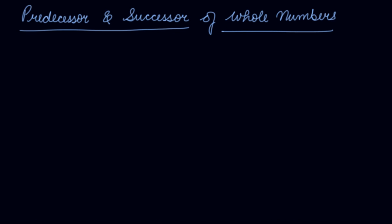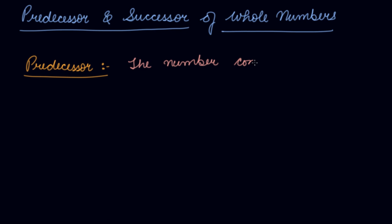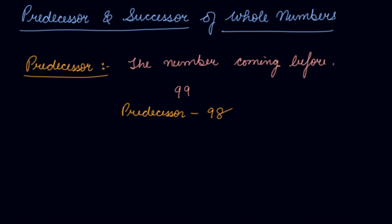I know you all are very intelligent. You all know what is predecessor and what is successor. But still, in order to clear that more in your minds, today I will teach you the predecessor and the successor. What is predecessor? It means the number coming before. So, what is the predecessor of 99? The predecessor is what comes before 99 — it's 98. If I talk about finding the predecessor of 1091, then what will be the predecessor? It will be 1090.